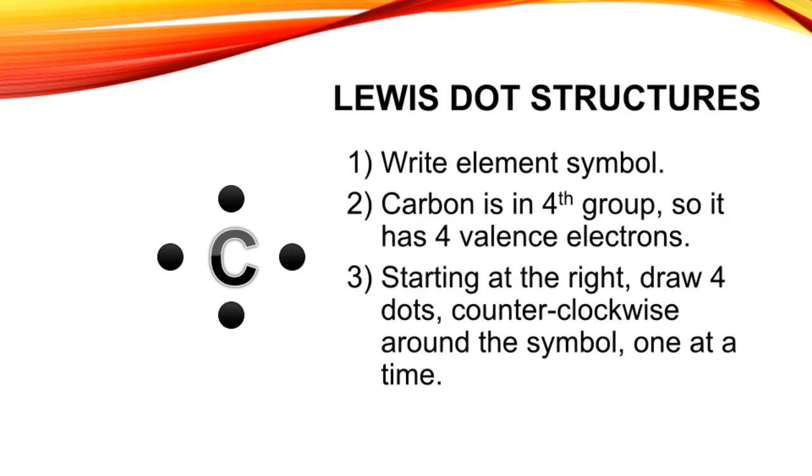Lewis dot structures: First, write the symbol of the element, and starting at the right, draw four dots counterclockwise around the symbol, one at a time.